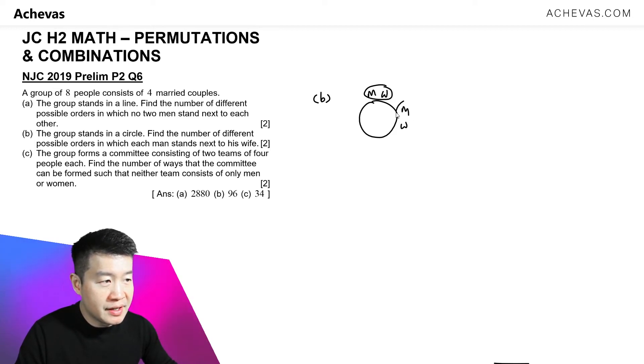This man stands beside his wife. So one group. Man beside the wife, another group. We have four couples. So man, wife, it forms the fourth group. And seeing this with one, two, three, four groups, we will do a circular permutation. So four minus one factorial.